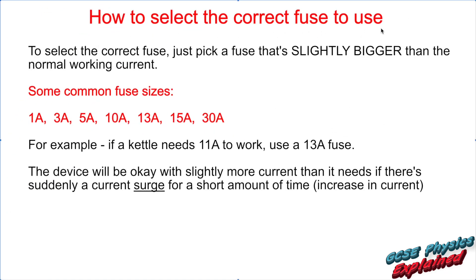In your exams you might be asked how to select the correct fuse to use. It's easy — just pick a fuse that's slightly bigger than the normal working current. Common fuse sizes are 1, 3, 5, 10, 13, 15, and 30 amps. If a kettle needs 11 amps to work, you choose a fuse slightly bigger than 11 amps, so that would be the 13 amp fuse. The device is okay with slightly more current than it needs, and if there's a brief current surge the kettle won't be damaged. If more current flows for a longer time, the fuse will blow and protect the appliance.